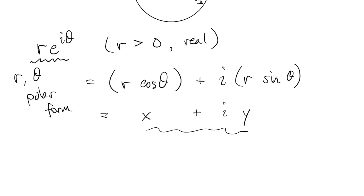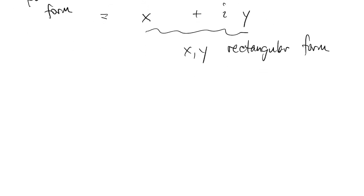And then that converts to the xy or rectangular or Cartesian form of that number. The connection, again, is just Euler's formula. In this polar form, r would be the modulus of z, or the magnitude of z, and θ is what we call the argument, or depending on the context, we might call it the phase of z.